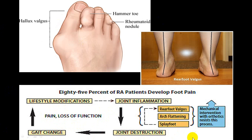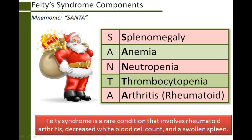Felty's syndrome is a rare condition where rheumatoid arthritis is associated with splenomegaly and pancytopenia — specifically neutropenia, thrombocytopenia, and anemia. The pancytopenia is due to splenomegaly. This is seen in the chronic stage of rheumatoid arthritis.